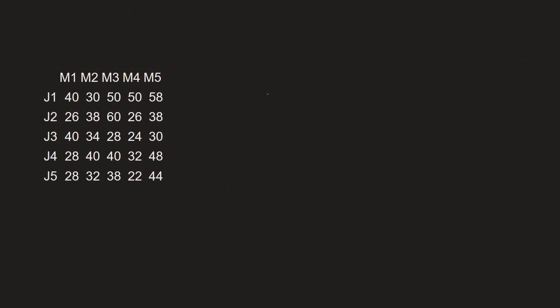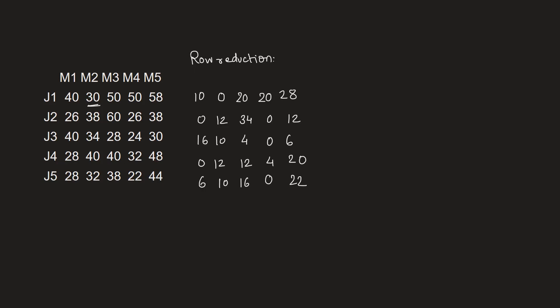In this problem we'll be using the Hungarian algorithm. We'll start by row reduction. In this first step, we subtract the minimum of each row from every element of that row. So the first row changes: 40-30=10, 30-30=0, 50-30=20, 50-30=20, and 58-30=28. Similarly the other rows follow — you can pause the video and cross-check your answer with this matrix.